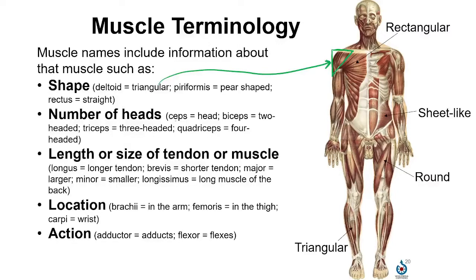Another word root you'll see within muscle names is 'ceps,' which refers to the number of heads or the different attachment points to bones. So the biceps in the arm has two heads. The triceps, posterior, has three. And in the thigh we find the quadriceps, which has four.